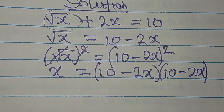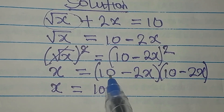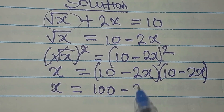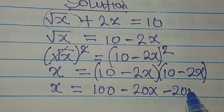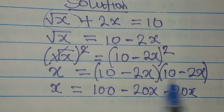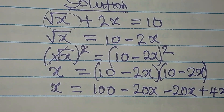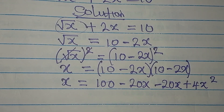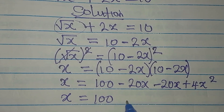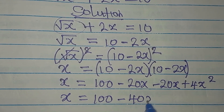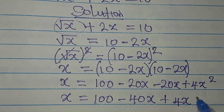Now continuing from here, we already have x on the left. On the right: 10 times 10 is 100, then 10 times 2x is 20x — so we add minus 20x. Then minus 2x times 10 gives another minus 20x. And then minus 2x times minus 2x gives us plus 4x squared. So x equals 100 minus 40x plus 4x squared.